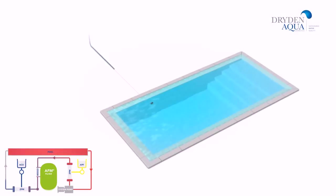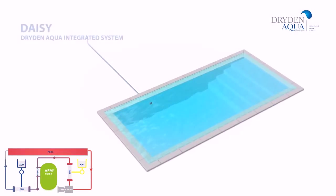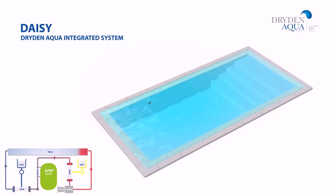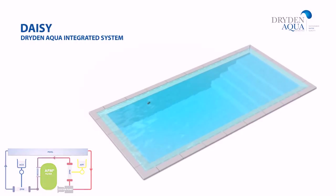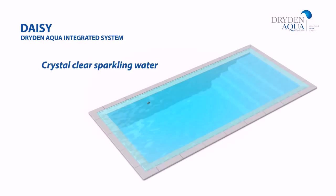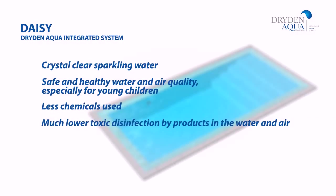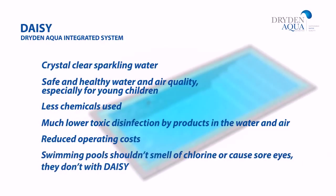All of the products and chemicals work together to amplify each other's performance. This is why it's called DAISY, because it is a Dryden Aqua Integrated System — the perfect solution to get the best water and air quality for both private and public swimming pools. Perfect healthy conditions at the lowest possible cost.